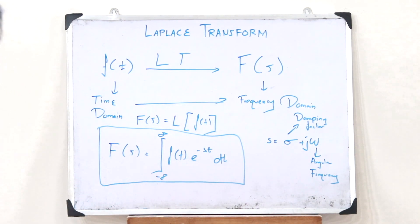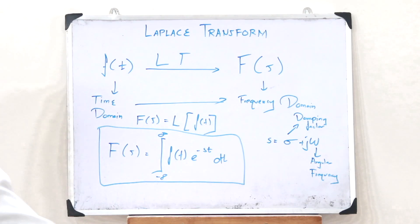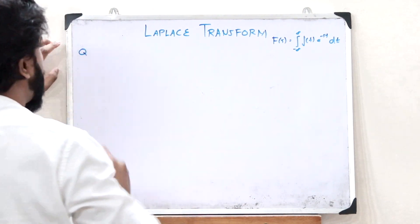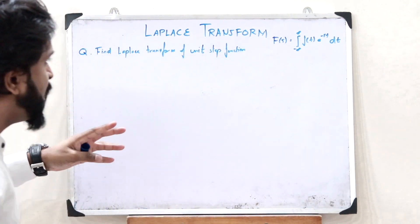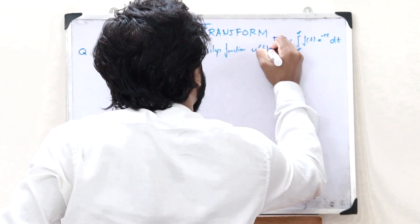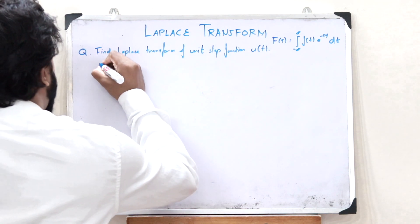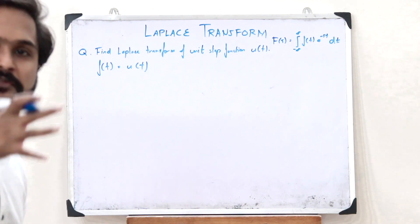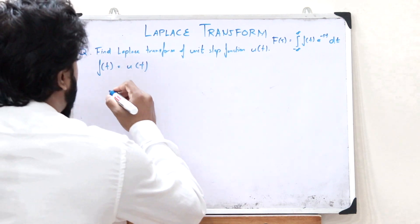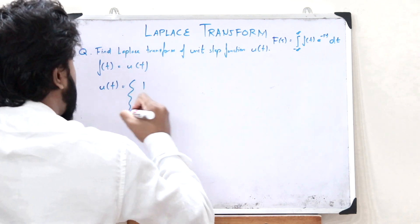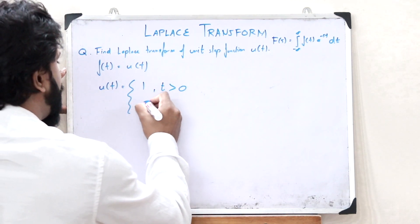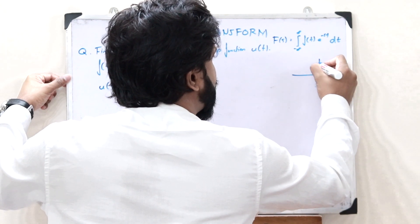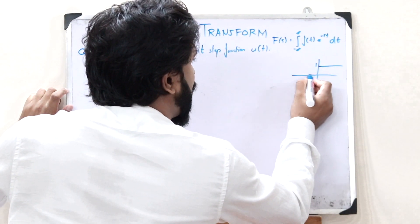F of S is equal to the integral from minus infinity to infinity of f of t into e raised to minus S T, d T — as simple as that. Now let us use this expression to find the Laplace Transform of a unit step function. The question is: find the Laplace Transform of a unit step function, denoted by U of t. By definition, U of t equals 1 when t is greater than 0, and equals 0 when t is less than 0.